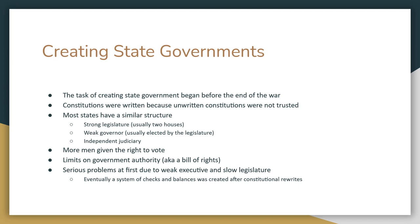Even today, in 2021, Britain doesn't have an explicitly written constitution. The British government works on decades and centuries of different laws and regulations that work together to form a sort of constitution, but there's no one actual piece of paper you can look at that says 'this is the constitution.' That meant that depending on who the king or queen was, they could interpret the constitution differently. The state governments here in what would become the United States didn't want that — they wanted everything written down and clearly defined.